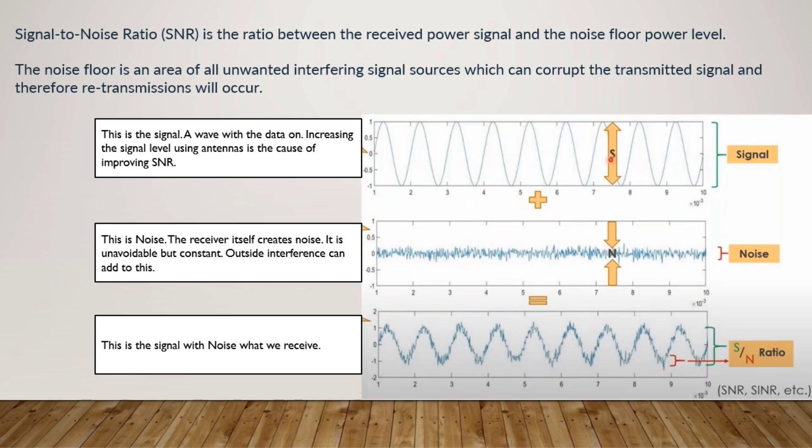As we can see in the diagram below, the first one is the signal. It's basically a wave which carries the data, and increasing this particular signal level using antennas is the cause of SNR improvement. Second, this is the noise. This is created by the receiver, and outside interference can also add to this. And the third one is the signal with the noise what we receive.